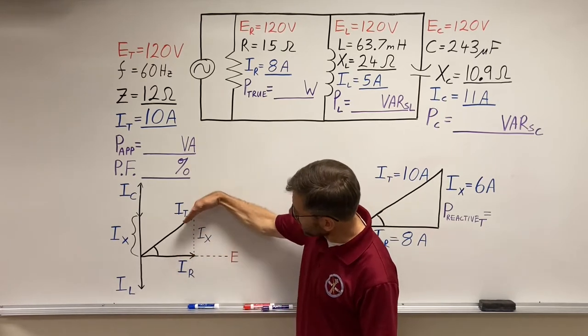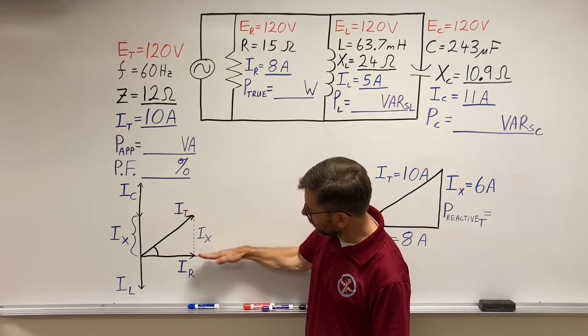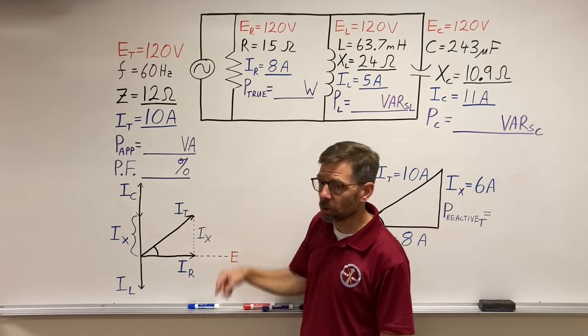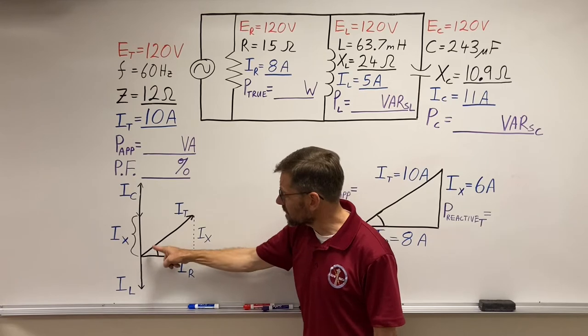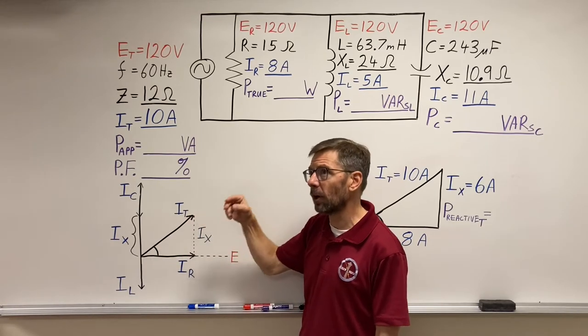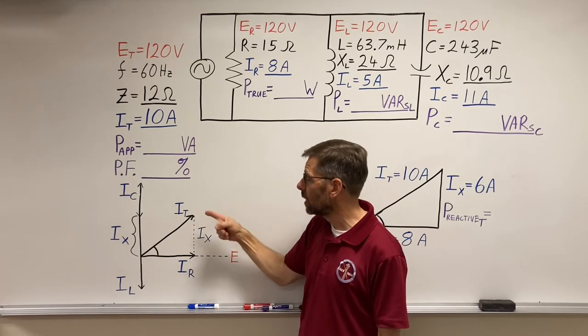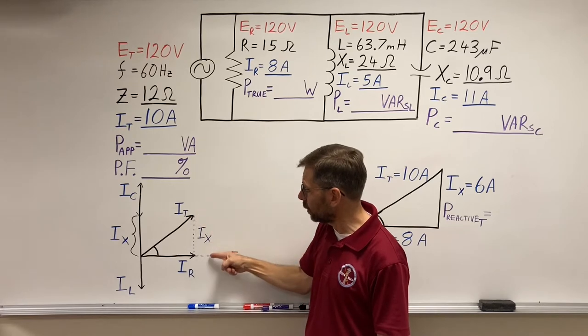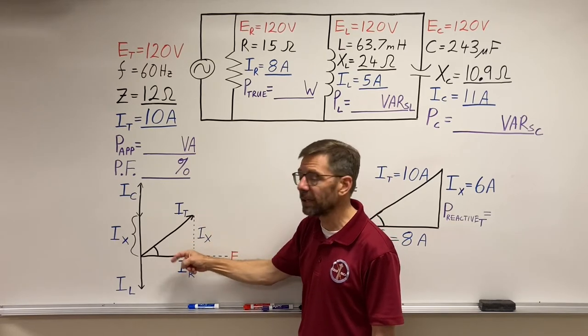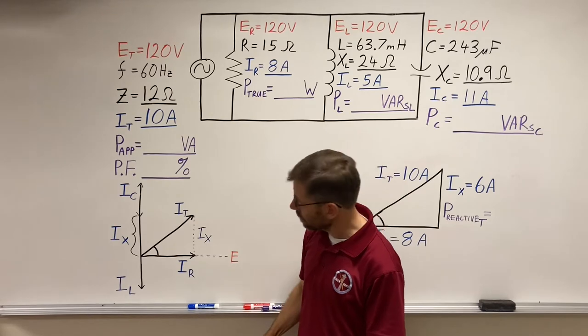How much is that total current leading the voltage at the source, how many degrees? We know it's in capacitive territory and therefore ICE - current will lead the voltage. We're going to find out by how many degrees in this circuit.